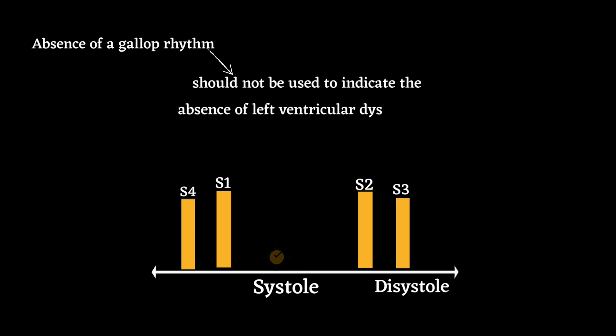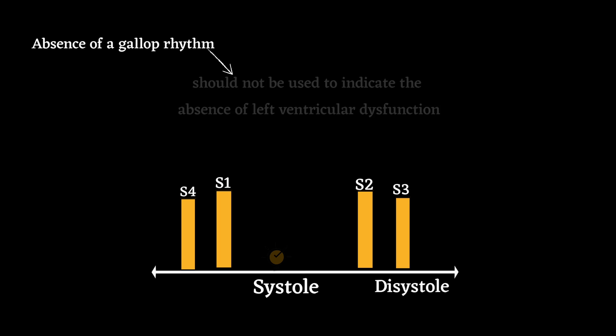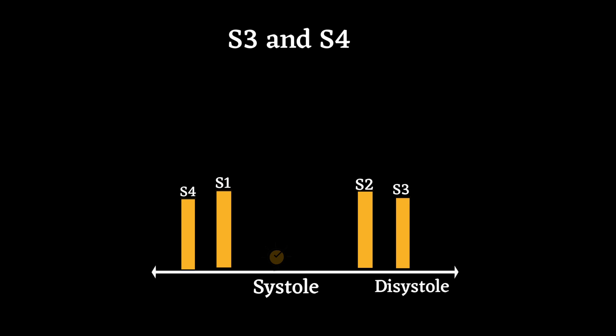The absence of a gallop loop rhythm should not be used to indicate the absence of ventricular dysfunction and certainly cannot replace other diagnostic testing. You can also have both an S3 and S4 sound; this is called a summation gallop, which is very rare.